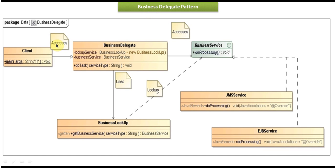Here I have shown the class diagram of the sample code which I am going to show. This is the class diagram, and here you can see the business service interface. It has a do processing method. This interface is implemented by JMS service and EJB service.